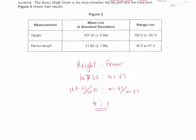Looking at the data, you can see that with height we've got a standard deviation and we've got a range, and the same for femur length. The first question asks: calculate the ratio of height to femur length. So height to femur—if you ask a question in an exam, in biology we always do it to 1 at the end. So 167.32 to 41.83. We want to get it to 1 on this side, so divide both numbers by 41.83, and it gives a 4 to 1 ratio. So the height is 4 times more than the femur length.